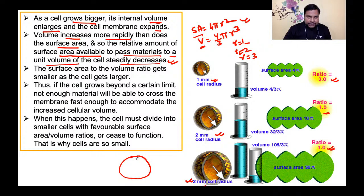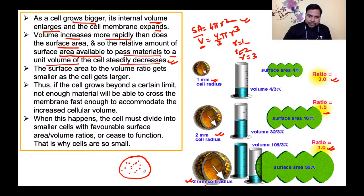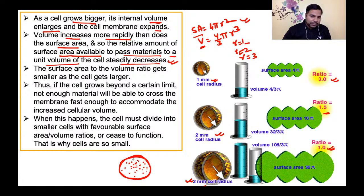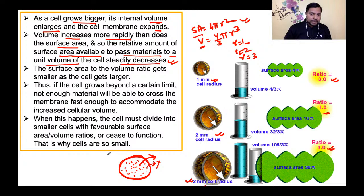मतलब यह है कि अगर surface बड़ा है और internal volume है, और disproportionately दोनों में increment हो रहा है — volume में increment ज़्यादा हो रहा है और surface area उसके मुकाबले कम increase कर रहा है — तो उस condition में अगर heat की बात करें, तो cell के अंदर heat production ज़्यादा हो रही है लेकिन surface area के through उस proportion में heat बाहर नहीं निकल पाती। इसी कारण से homeothermic animals का internal temperature constant रहता है।